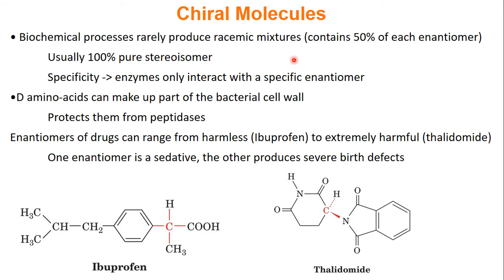When humans make chiral compounds in a lab, they usually produce a racemic mixture, meaning 50% of each enantiomer is present. But inside living organisms and cells, biochemical processes hardly ever make racemic mixtures — they usually create 100% pure stereoisomer. That's because enzymes inside your body are incredibly specific for either L or D products, and all enzymes in your body only work with L amino acids.